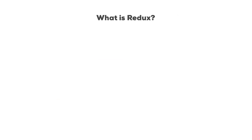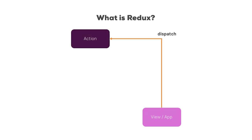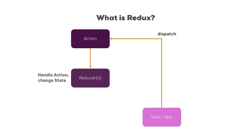Therefore, Redux has a different approach. Here, we have our view or our application, and in any given component, we dispatch actions. One action might be 'change name', to stick with the previous example. This action is then ran through a reducer — that is where the name Redux reducer comes from. A reducer has one simple job or task.